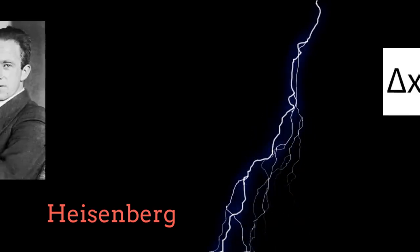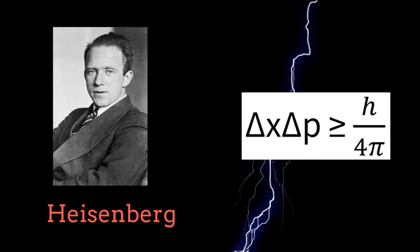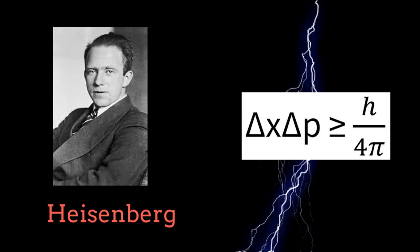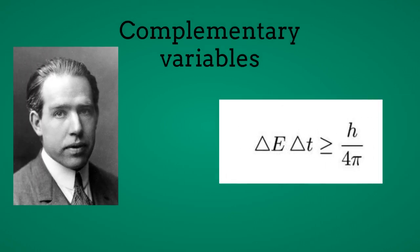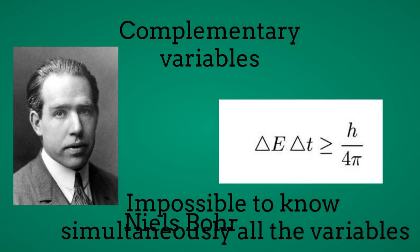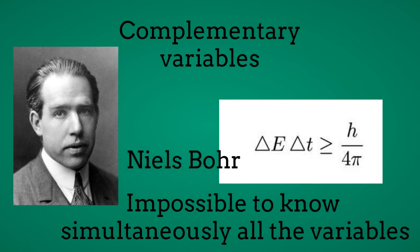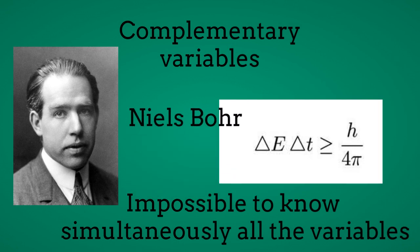Another key concept is the uncertainty principle, which states that it is impossible to know simultaneously the position and the momentum of a particle. The uncertainty principle is not exclusive to position and momentum variables; it also applies to other pairs of variables, like the angular momentum-angle pair or the energy-time pair. More generally, this principle is known as the complementarity principle, postulated by Niels Bohr, which establishes that it is impossible to know simultaneously all the variables related to the dynamics of a system.